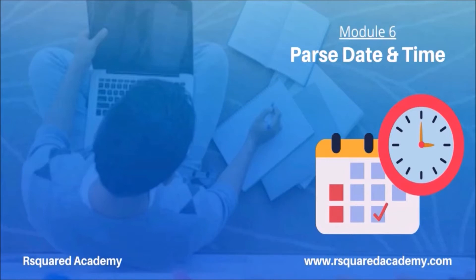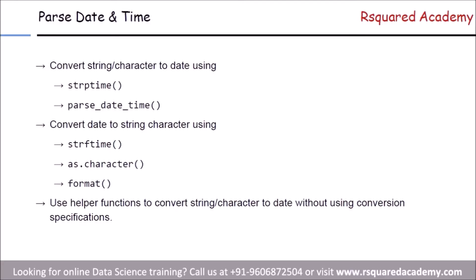Both Base R and the lubridate package offer functions to parse date and time, and we will explore a few of them in this module. We will initially use functions from Base R and later move on to explore those from lubridate, which gives us an opportunity to compare and contrast. It will also allow us to choose the functions based on the data we are dealing with. When converting from string or character data to date, we will be using strptime and parse_date_time.